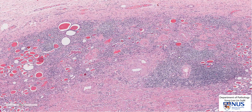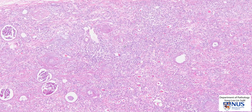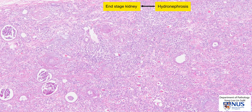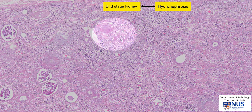Let's have a look at another example. Here is another case of end-stage kidney, and this is due to hydronephrosis from distal obstruction. And we have again the sclerosed glomerular structures there, here, and also here, and here.